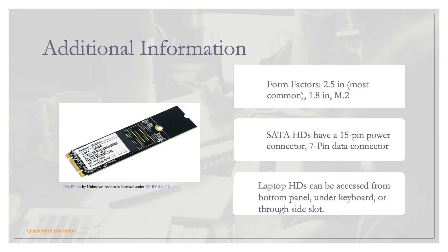Hard drives can come in three form factors: 2.5 inches, which is most common, 1.8 inches, and the smaller M.2 form factor. SATA hard drives have a 15-pin power connector and a 7-pin data connector. Laptop hard drives can be accessed from the bottom panel, underneath the keyboard, or through a slot on the side of the laptop.